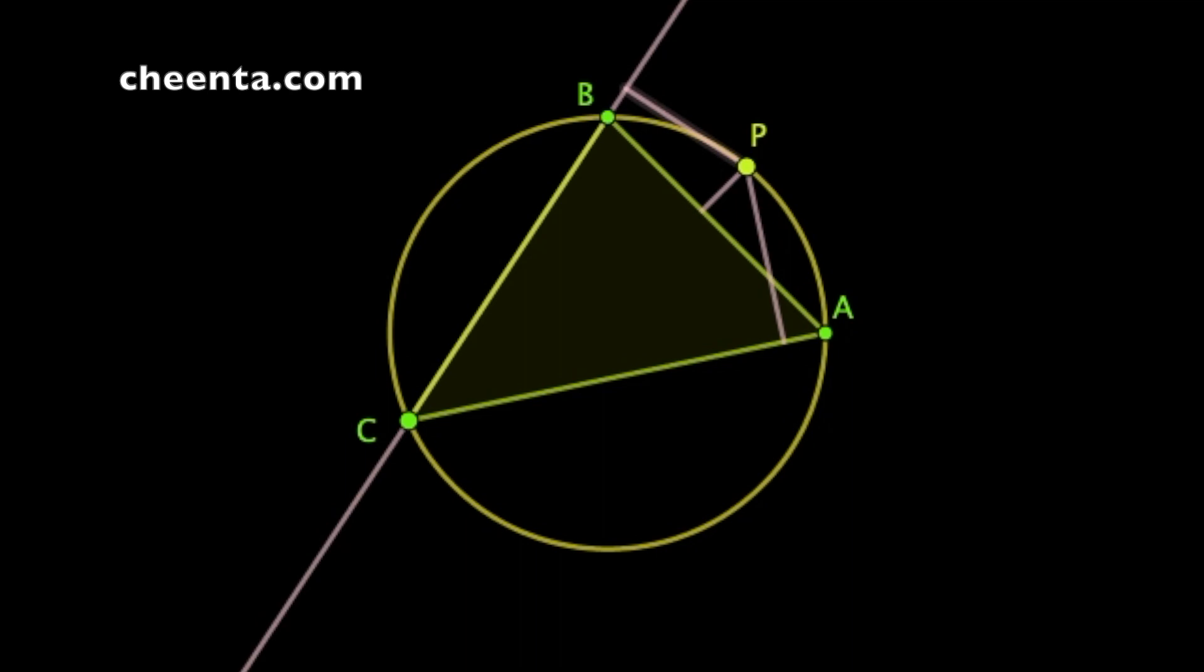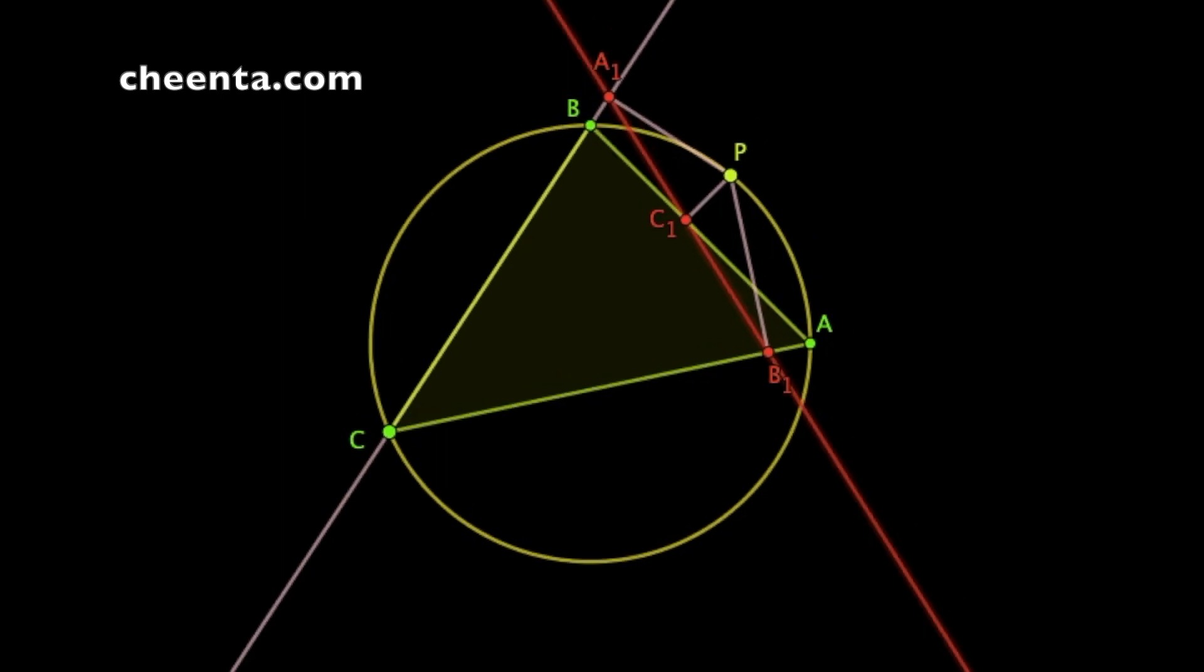Suppose the feet of the perpendiculars are A1, B1 and C1. Now it is a well-known theorem that these feet of the perpendiculars, that is A1, B1 and C1, are collinear. That is they lie on the same straight line.